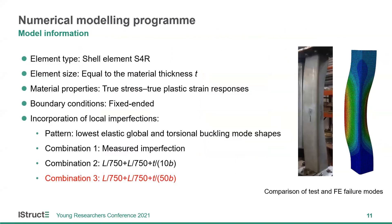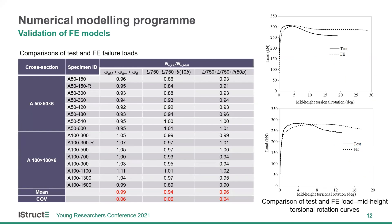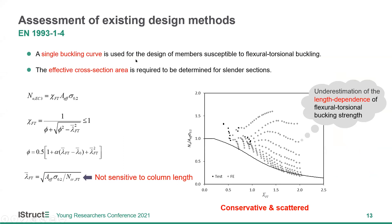We then conducted a numerical modeling program. Numerical models were developed and validated against the test results, and the validated numerical models were then used to perform parametric studies. Based on the test and FE data, the accuracy of existing design methods was assessed. In the European code EC3, a single buckling curve is used to predict the flexo-torsional buckling strength. However, for angle section columns with the same cross-section size but different member length, the EC3 buckling curve underestimates the length dependence of the failure load and results in very conservative and scattered strength predictions.